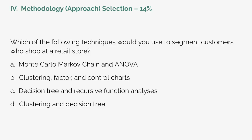Next up, Methodology Approach Selection, which represents 14% of the exam. For questions on this topic, you'll scrutinize approaches used by other researchers with similar aims and objectives. Here's a sample question: Which of the following techniques would you use to segment customers who shop at a retail store? A) Monte Carlo Markov chain and ANOVA; B) Clustering, factor, and control charts; C) Decision tree and recursive function analyses; or D) Clustering and decision tree. The correct answer is option D — the best way to do segmentation is clustering or decision trees.